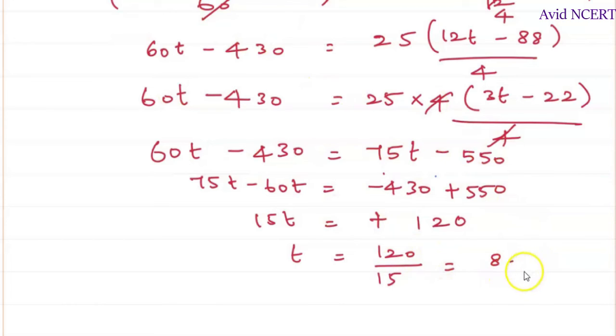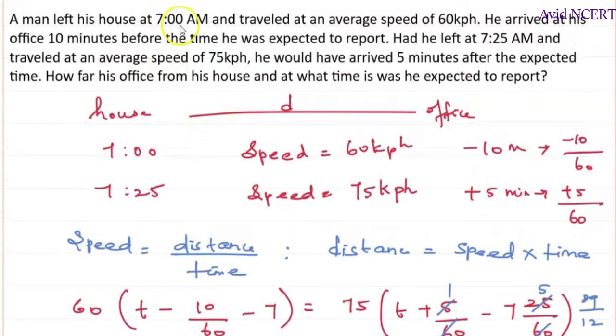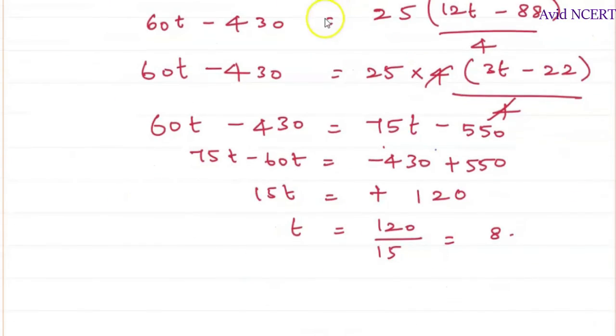So the actual time taken to reach the office is 8 when he started by 7 a.m. So when he starts from home by 7 a.m. and travels at the speed of 60 kilometers per hour, he reaches the office at 8, which means the time taken here is 1 hour.